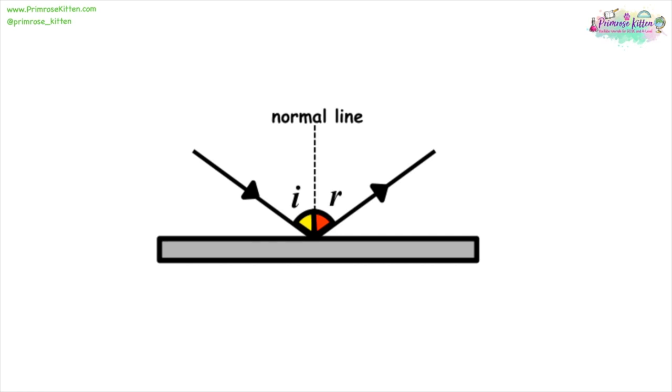When a wave is reflected, it is going to come in, meet the boundary, and then be reflected off. Our angle of incidence is always going to be equal to our angle of reflection. So we can always say that I equals R.